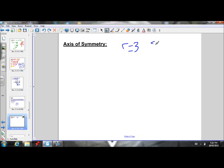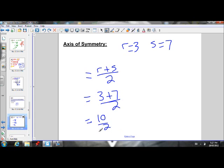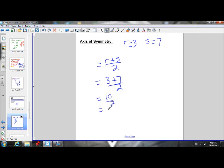So our r and s values are 3 and 7. To calculate the axis of symmetry, that's equal to r plus s divided by 2. So that's 3 plus 7 divided by 2, 10 divided by 2, which equals 5.